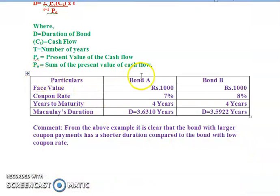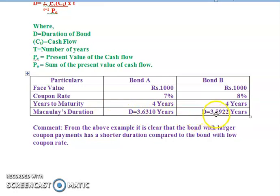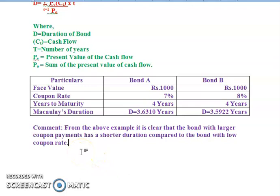Comparing both bonds: Bond A and Bond B both have a face value of rupees 1000 and four years to maturity. Bond A has a coupon rate of seven percent and duration of 3.6310 years; Bond B has a coupon rate of eight percent and duration of 3.5922 years. The conclusion is that the bond with larger coupon payments has a shorter duration compared to the bond with a lower coupon rate.